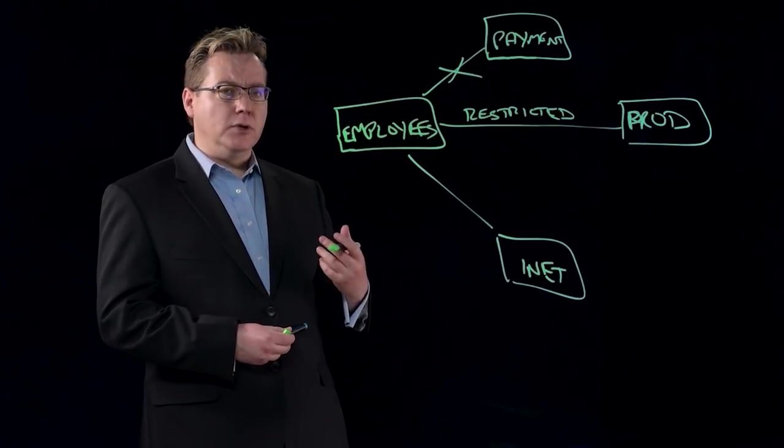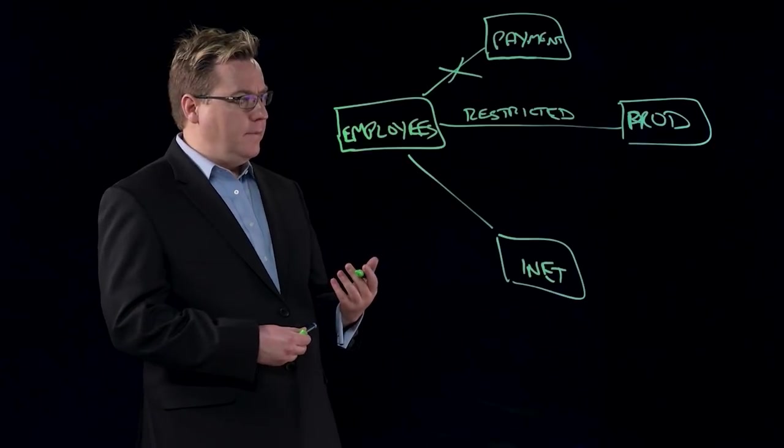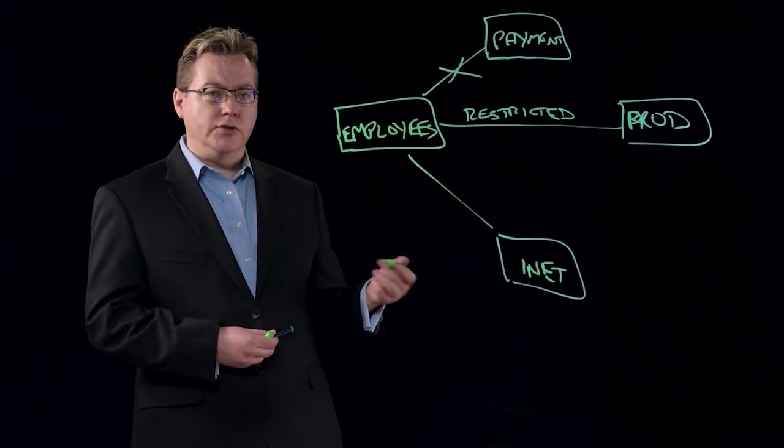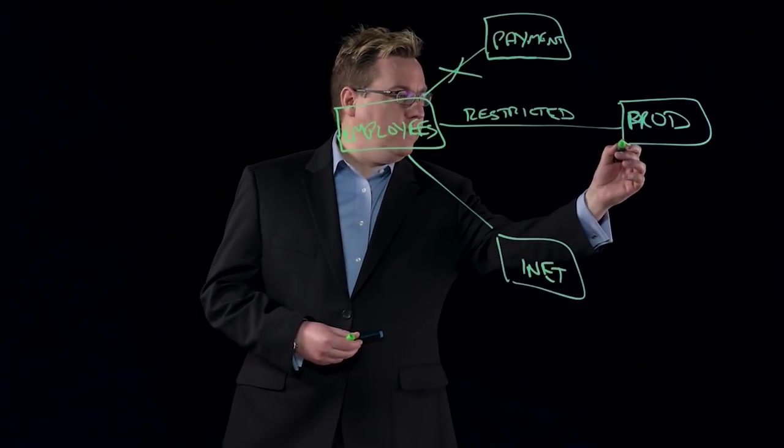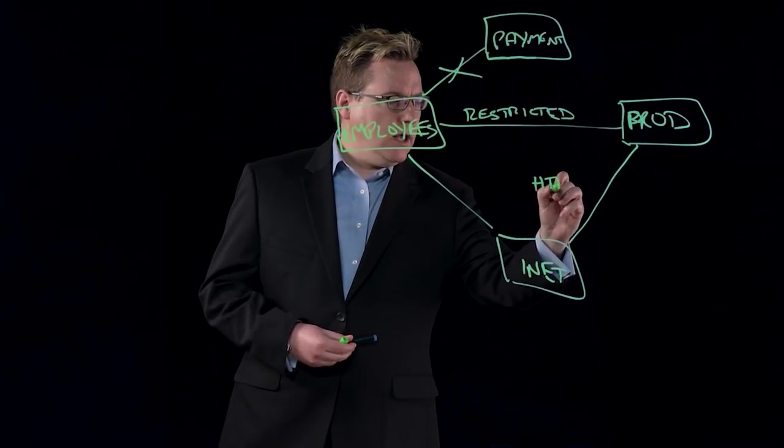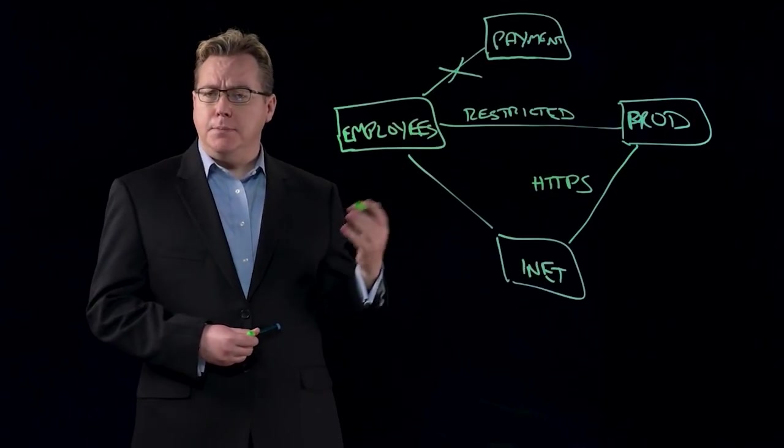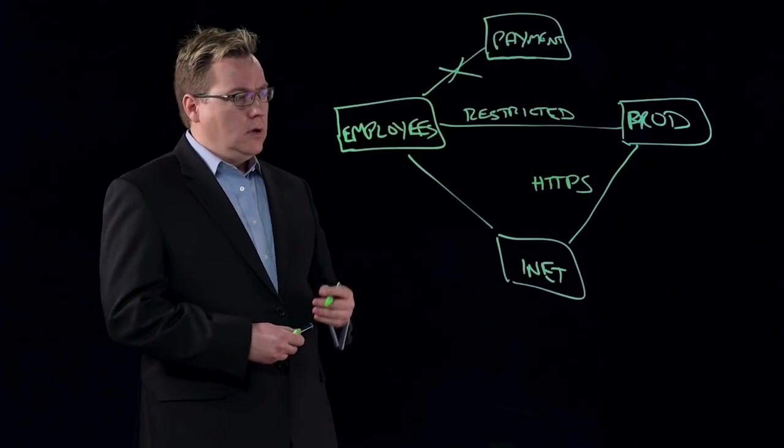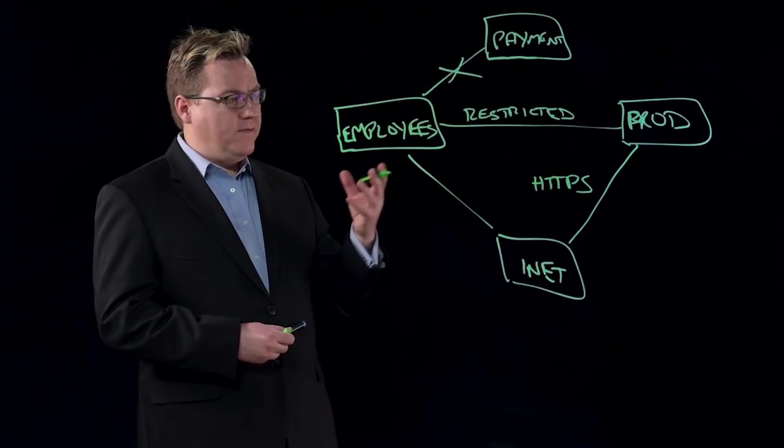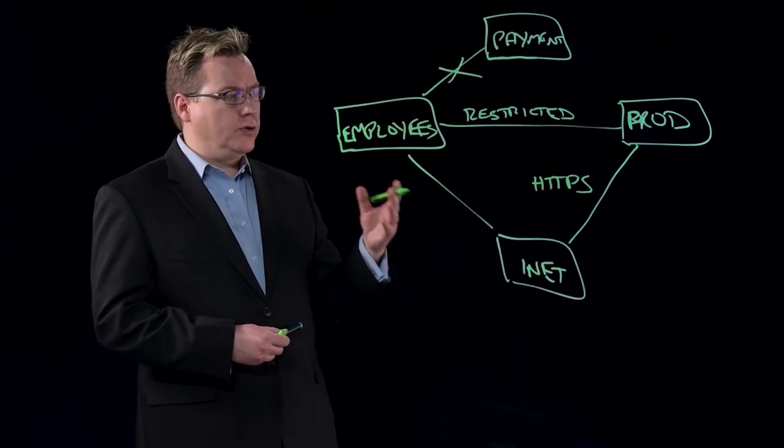And it is possible to build more subtle or granular policies and model them. For example, our production servers may be allowed to talk to the internet or vice versa, but that might say that you can only use HTTPS, so an encrypted traffic stream, and HTTP would be banned. Today, that will be very easy in Stealthwatch to model and understand and ensure that you know it.